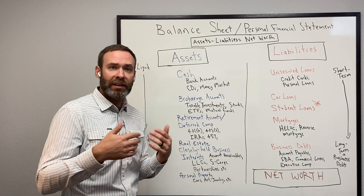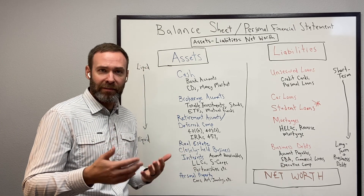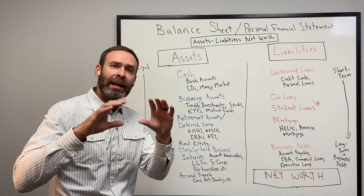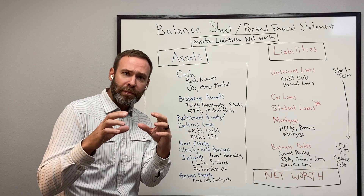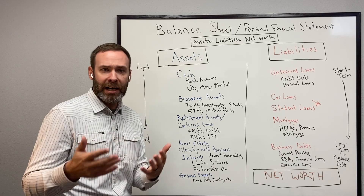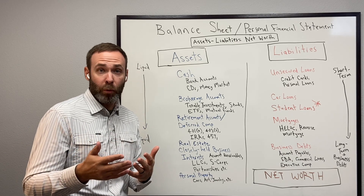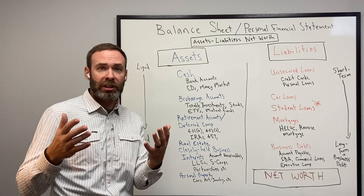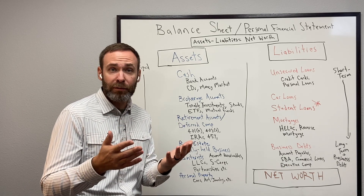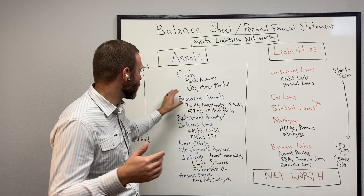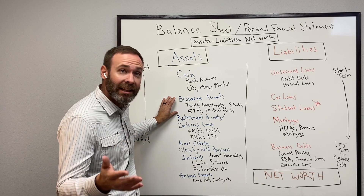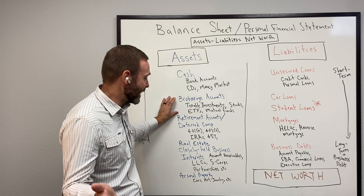Next, any sort of taxable investment that you might have. This would be an investment that you own outside of a retirement plan from work. So if you have a brokerage account with some stock that you may have traded, that would go right there in that next line — easily liquidated into cash.